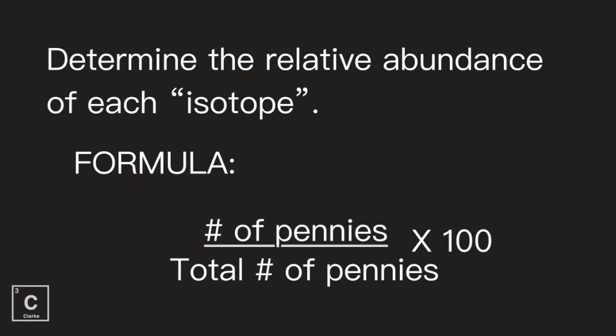It ain't a lab without post-lab questions. We need to determine that percent, the relative abundance of the isotope. Here's the formula: number of pennies on top, total pennies on bottom, times 100. That's going to give you a percent. You'll have to do this for both isotopes, so you should have two percents—one for pre-1982, one for post-1982.